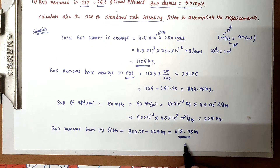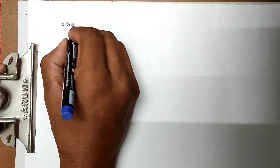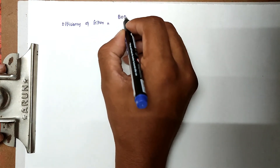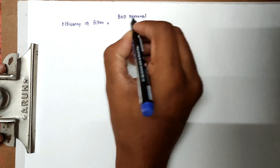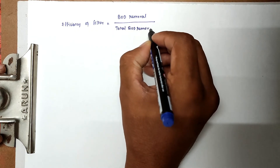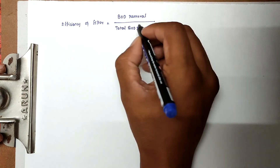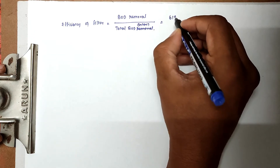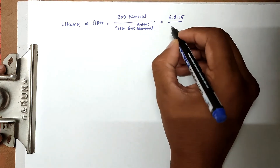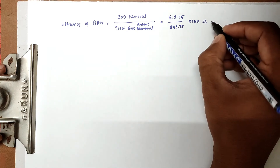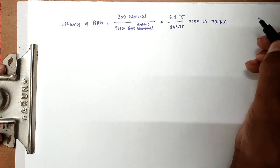From these values we can find the efficiency of the filter. Efficiency equals BOD removal divided by total BOD entering, into 100. So 618.75 divided by 843.75 into 100 gives an efficiency of 73.3%.